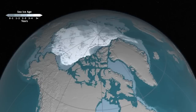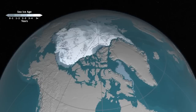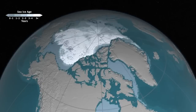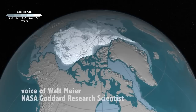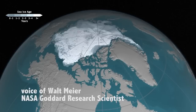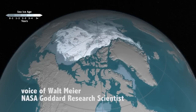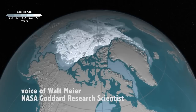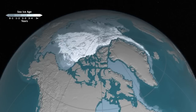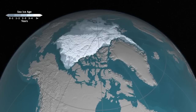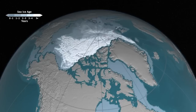In this animation, we're taking Arctic sea ice into the third dimension. Here, we're looking at the ice age, which is an indicator of thickness. Generally, older ice is thicker ice.